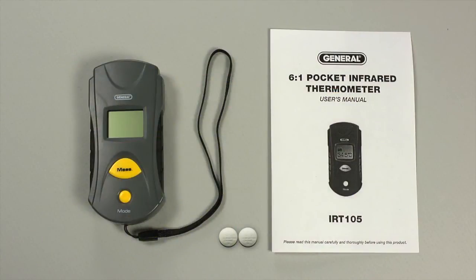Wrist strap, batteries, user's manual, and one-year limited warranty are included. Easy, compact, lightweight, and powerful. The IRT-105 infrared thermometer from General Tools and Instruments.